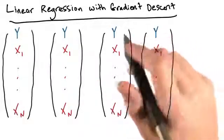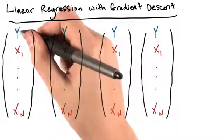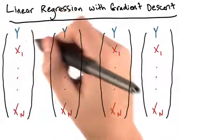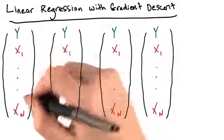When performing linear regression, we usually have a number of data points. Each data point has an output variable, which we'll call y, and then a number of input variables, which we'll call x1 through xn.